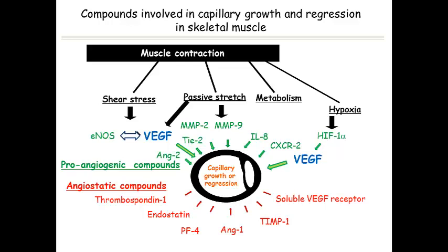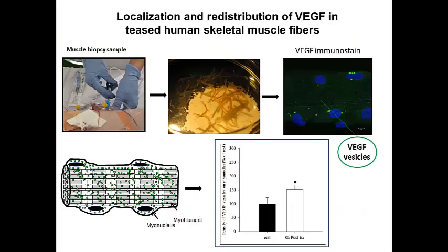Only a limited number of angiomodulatory compounds have so far been examined in skeletal muscle, but it is believed that by far the most important pro-angiogenic factor in skeletal muscle is vascular endothelial growth factor, VEGF. A very interesting aspect of angiogenesis in skeletal muscle is the fact that the skeletal muscle cells are involved in the regulation of their capillarization. They do so by storing large amounts of VEGF that can be secreted to the extracellular fluid, where it can act on the capillary endothelial cells and promote angiogenesis.